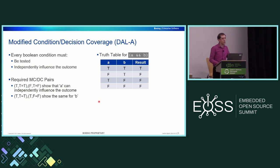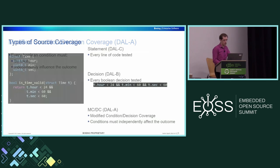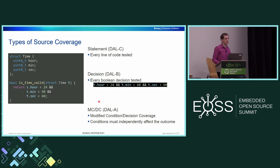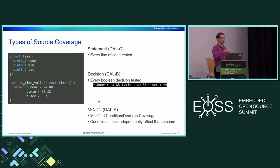An audience member asked what stage of development the testing happens at and whether you need access to source code for a large codebase like Linux. Right now we're working with Linux, which already has a huge existing codebase, so we're looking to apply source code coverage to the existing code with our tests. However, generally, if you were doing this in a forward development situation, you'd want to do it all at the same time — write your code, write your tests to go along with it, and as part of your CI/CD pipeline it would generate coverage for you.